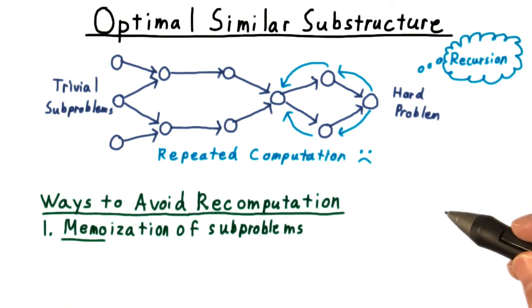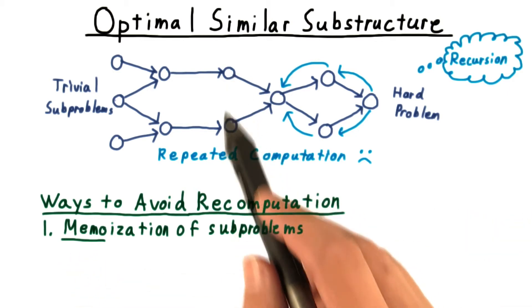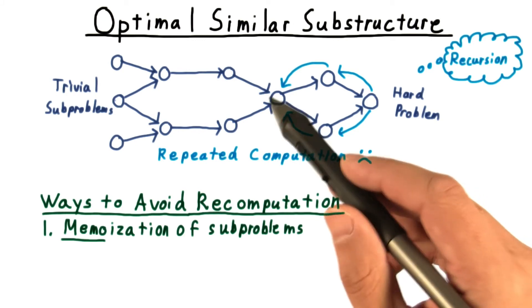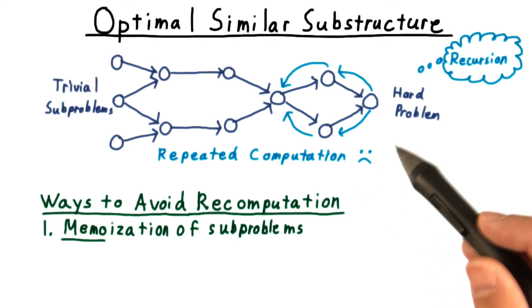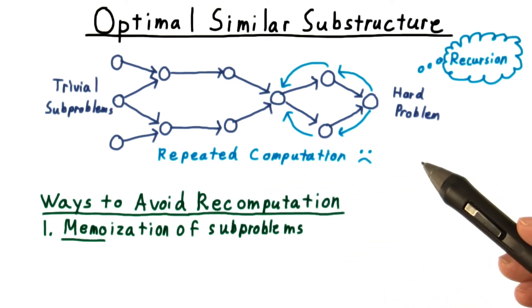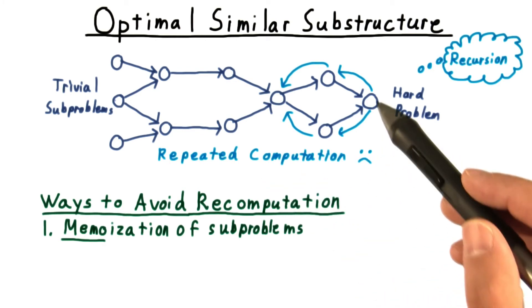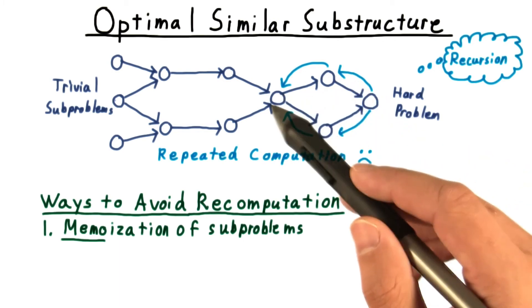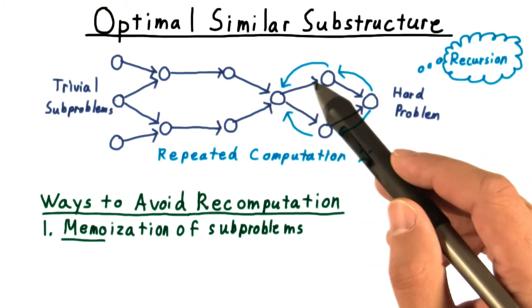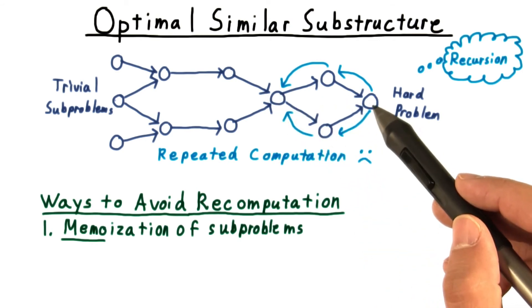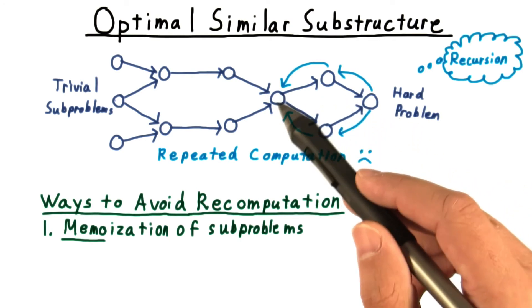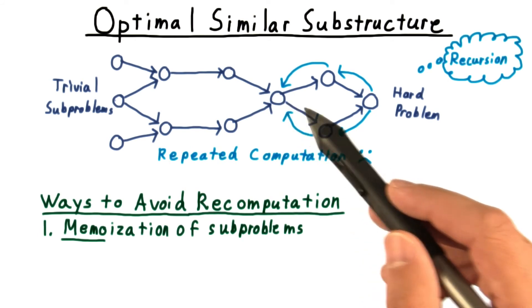There are two ways to cope with this problem of repeated computation. One is to memoize the answers to the subproblems. After we solve it the first time, we write ourselves a memo with the answer. And before we actually do the work of solving a subproblem, we always check our wall of memos to see if we have the answer already. So for instance, for this subproblem here, I would have memoized it, written myself a memo to remember that I've already done it. And so when I come this path here, I wouldn't redo all this computation. I just look up the answer.